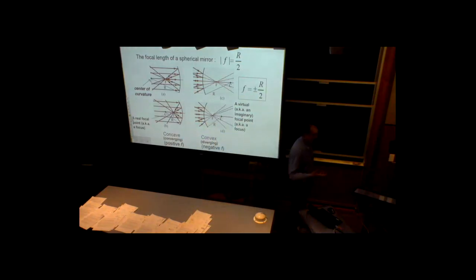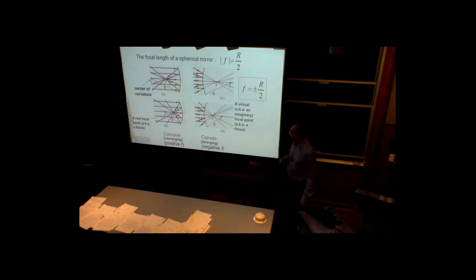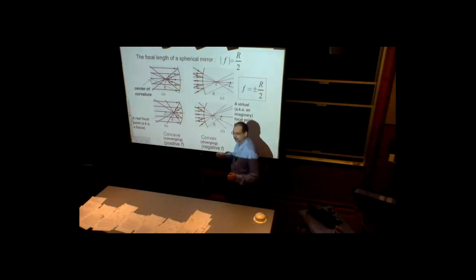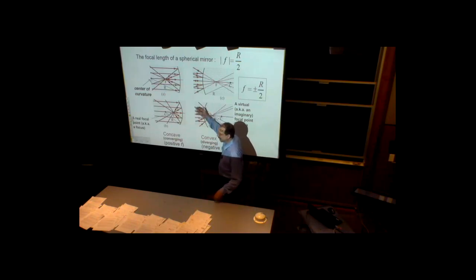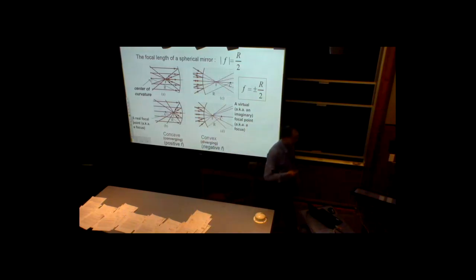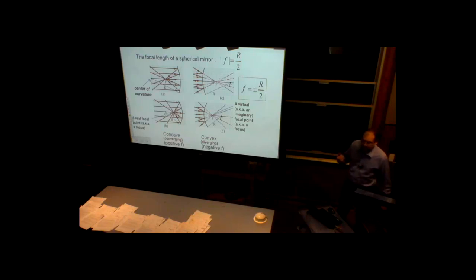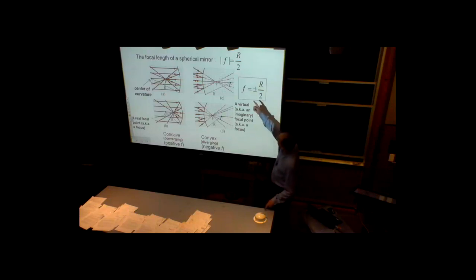For a convex or diverging mirror, we also have a special point, but actual rays don't converge there - rays diverge after reflection. However, the extensions of those rays, the invisible imaginary lines, converge geometrically at what we call a virtual focal point. The focal distance to this point is negative. The magnitude of the focal distance for all mirrors equals half the radius of the sphere.